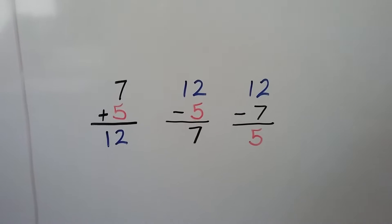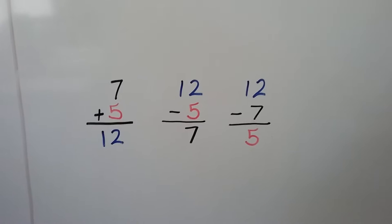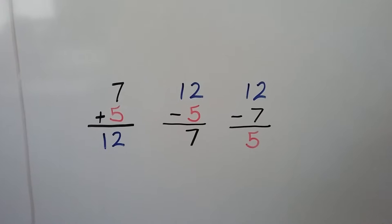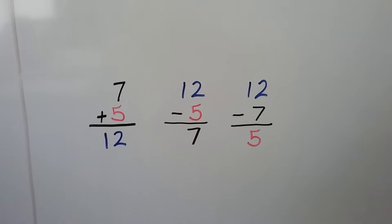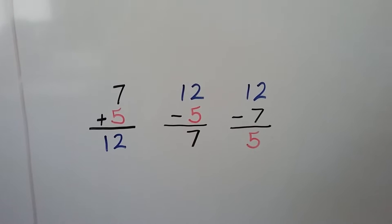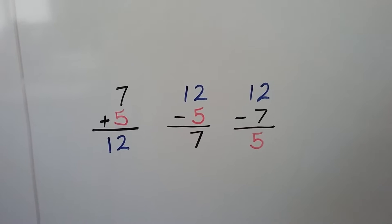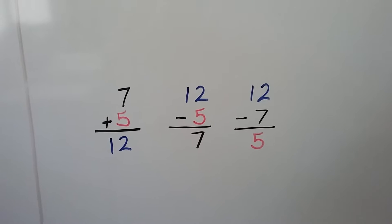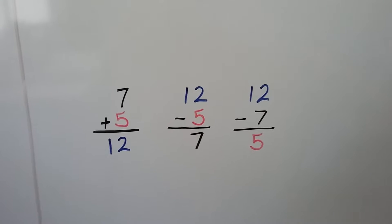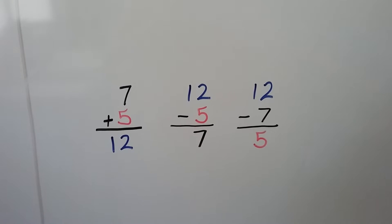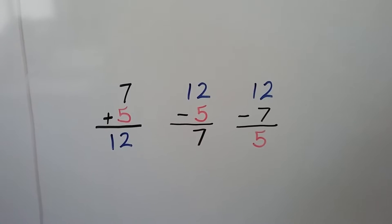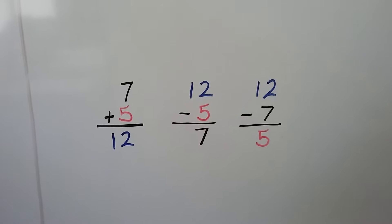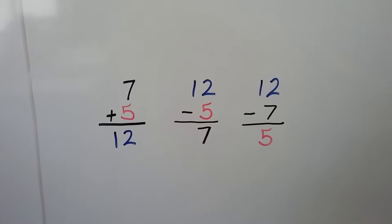Seven plus five equals twelve. Twelve minus five equals seven. And twelve minus seven equals five. Our three related facts are seven, five, and twelve.